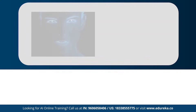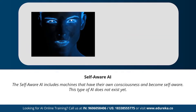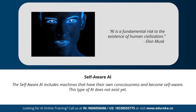The last type of AI is self-aware artificial intelligence. This is the stage where machines have their own consciousness and become self-aware. This type of AI is far-fetched, but achieving a stage of super intelligence may be possible in the future. Geniuses like Elon Musk and Stephen Hawking have constantly warned us about the evolution of AI.